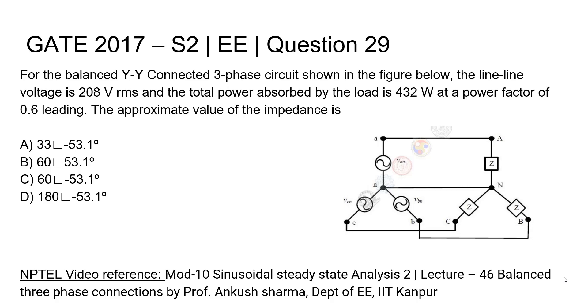For the balanced Y-Y connected three-phase circuit shown in the figure, the line-to-line voltage is 208V RMS and the total power absorbed by the load is 430W at a power factor of 0.6 leading. The approximate value of impedance is dash. Four options are given to us.